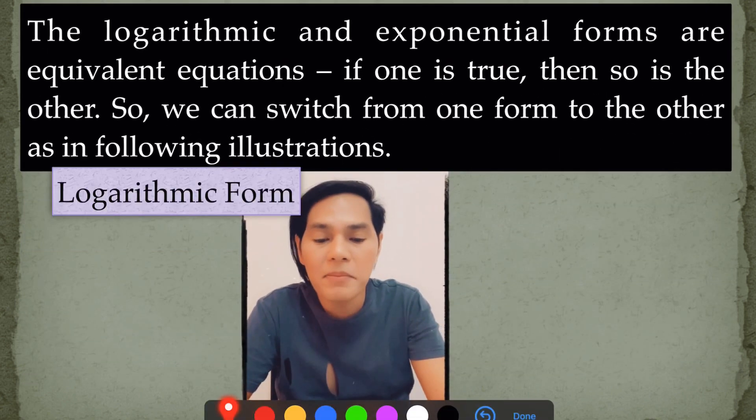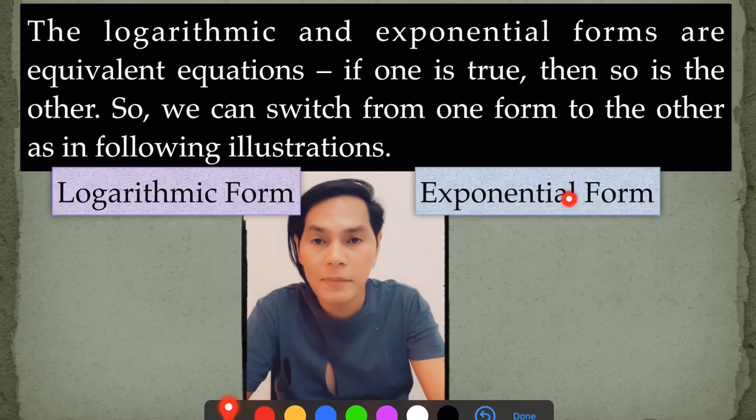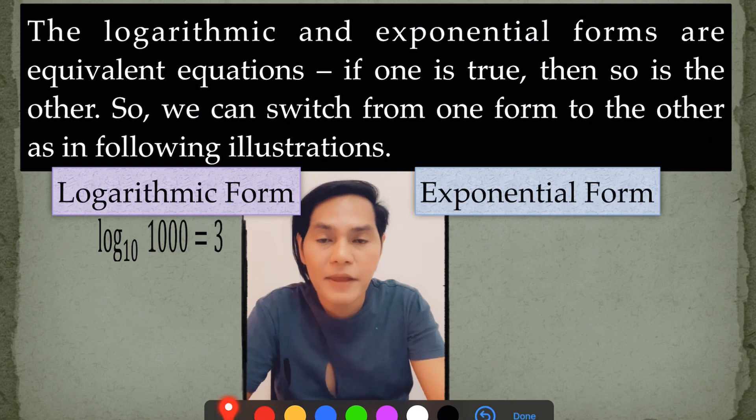Look at this. The logarithmic form and the exponential form. I have here an example. The log of 1,000 to the base 10 is equal to 3. That is equal to 10 to the power of 3 is equal to 1,000.